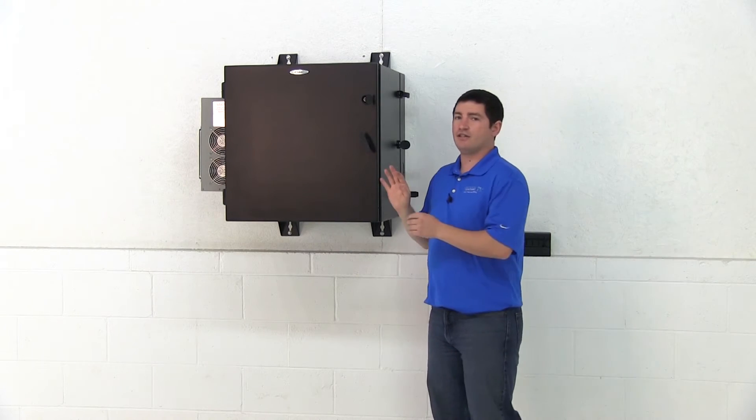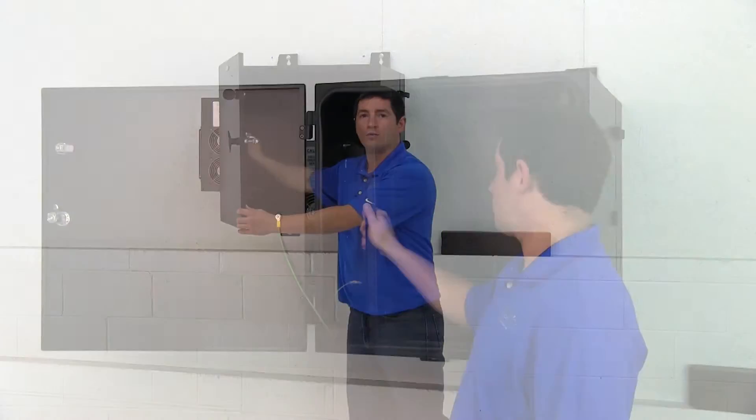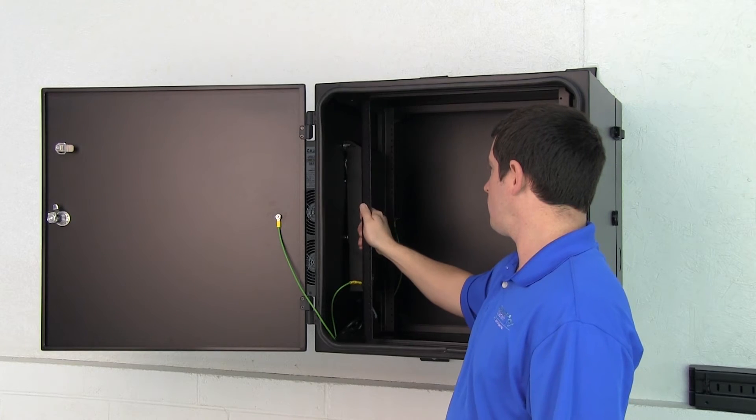The center swing out section features two pairs of 12-24 rails adjustable front to rear.